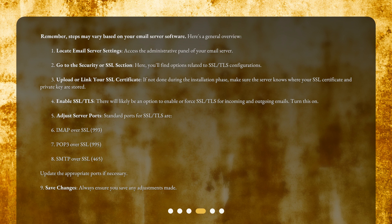Adjust server ports. Standard ports for SSL/TLS are: IMAP over SSL — 993, POP3 over SSL — 995, and SMTP over SSL — 465. Update the appropriate ports if necessary. Finally, save your changes — always ensure you save any adjustments made.